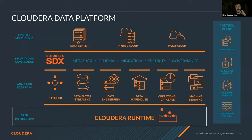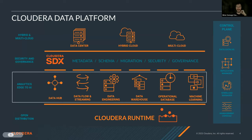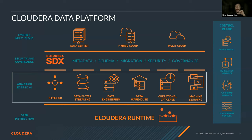These components form a single tested distribution. On top of the runtime, data services target specific points of the data lifecycle. Data moves through five stages: first, ingest or collect data with streaming and data flow; second, enrich and clean it with data engineering; third, report with data warehouse; fourth, serve data apps with operational database; fifth, do predictions with AI and machine learning. There's also a data hub, which we'll discuss more. On top of all this is SDX, the Shared Data Experience, providing consistent security and governance across CDP no matter which data service is used.